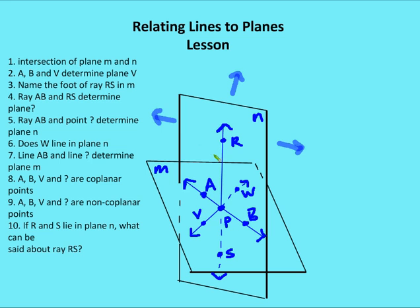Third, the foot of ray RS in plane M is point P — the point of intersection. Fourth, ray AB and RS determine plane N, since two intersecting lines determine a plane. Fifth, ray AB and point R determine plane N, because AB and R give us a line and a point not on the line — three non-collinear points on N.